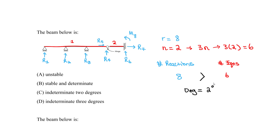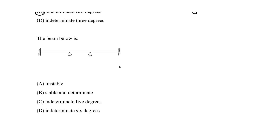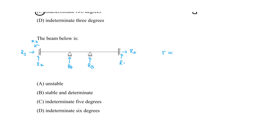The correct answer for example one is indeterminate with two degrees. Now let's do the second beam example. First, find the reactions. We have a fixed end with R1, R2, and moment M3; a roller giving R4; another reaction R5; and a second fixed end with R6, R7, and moment eight. Total reactions: eight.